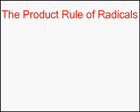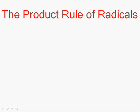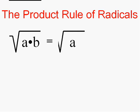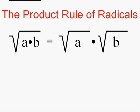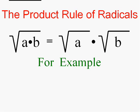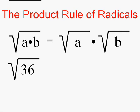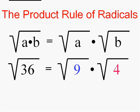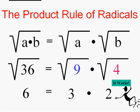We're going to use the product rule of radicals to simplify these radicals. Since the word product infers multiplication, the product rule is just what you think: the square root of two numbers multiplied equals the square root of one of them times the square root of the other. For instance, consider the square root of 36. We know 36 is 9 times 4, so we can break it up into the square root of 9 times the square root of 4 — that's 3 times 2, which equals 6. It works every time.